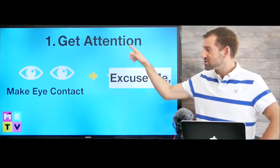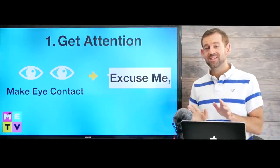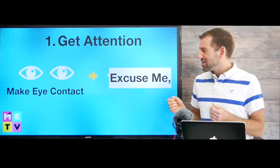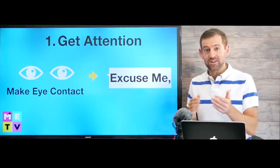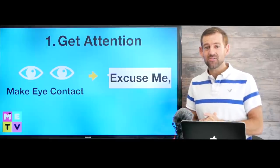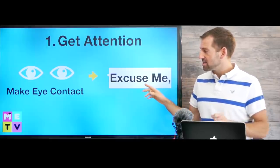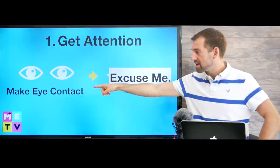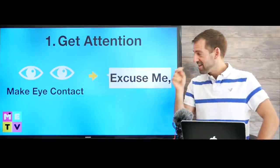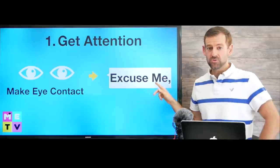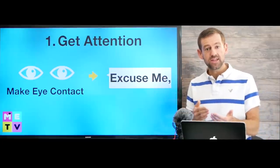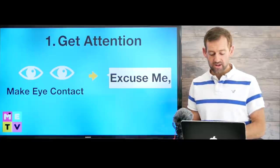Let's look at these steps. First step: get someone's attention. This can be the scariest step because you need to talk to someone. The best way to do this is to make eye contact, look at someone and say, "Excuse me." That will get their attention, and then you can ask them for directions.